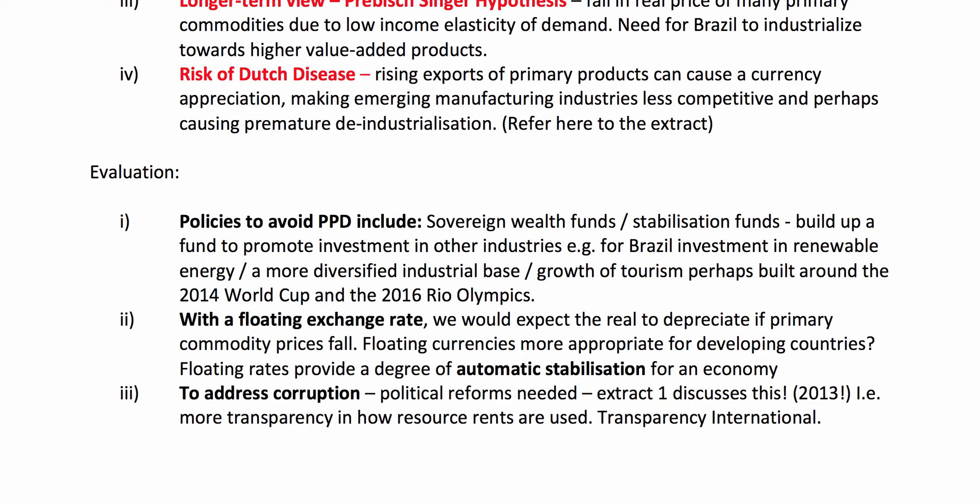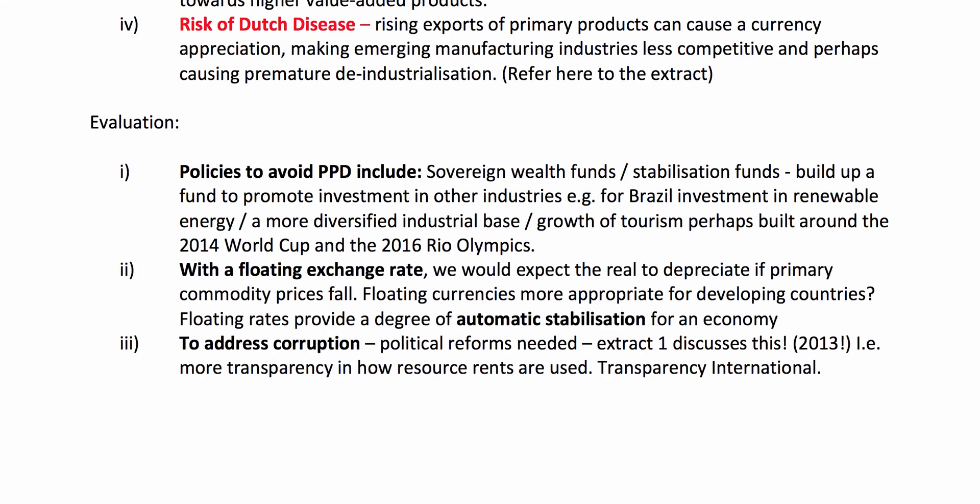Evaluation points: it's possible for countries to avoid primary product dependency. Many countries have set up sovereign wealth funds and stabilisation funds — including Ghana and Angola — building up funds to invest in other sectors and diversify their economy into light manufacturing, infrastructure, and tourism. A floating exchange rate also helps: if primary commodity prices fall, the exchange rate tends to depreciate, which can absorb some of the shock. Crucially, countries that are primary product dependent need to make sure that wealth from the underground turns into real economic growth above the ground, so corruption reforms and improving transparency are important. You just need to make two key evaluation points for that question.